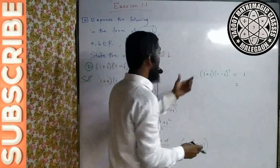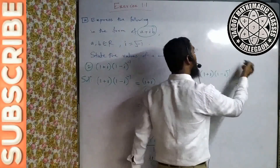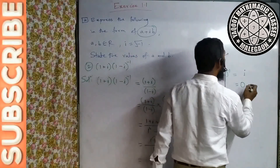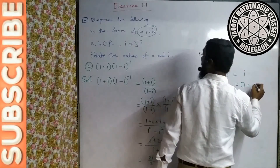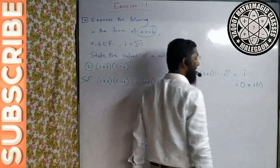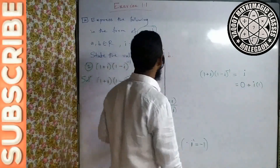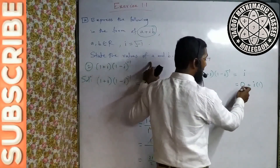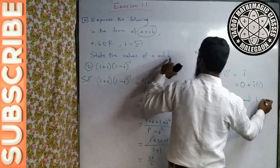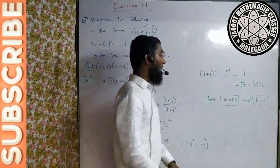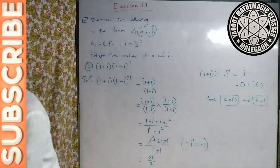Toh (1+i)(1−i)^(−1) ki value i hai. Isko a plus ib ke form mein likhna tha. Yeh purely imaginary hai — complex number jiska real part zero hota hai. Toh real part zero hai: zero plus i × 1. Is complex number i ko is form mein likha ja sakta hai: 0 + i×1. Comparison karke: a is equal to zero and b is equal to 1. Yeh question bhi bahut simple hai.